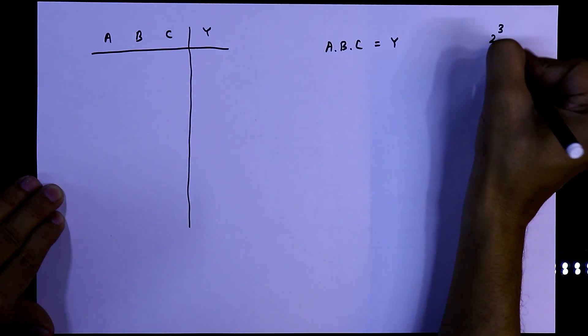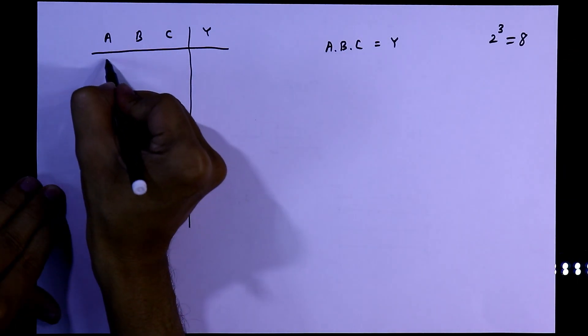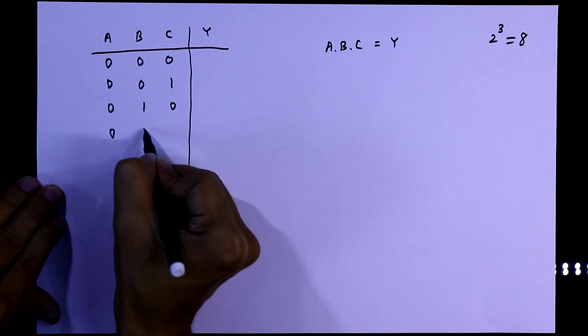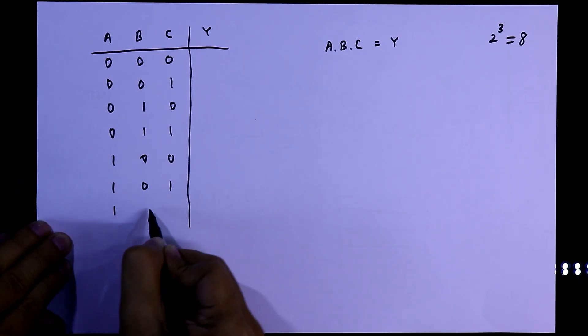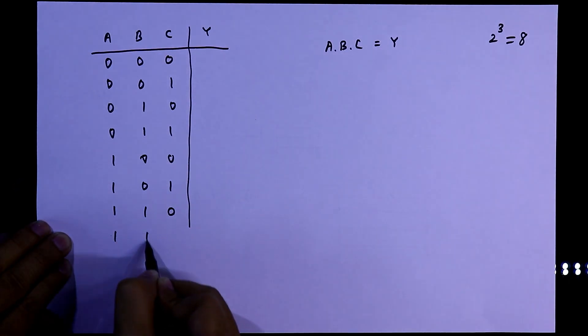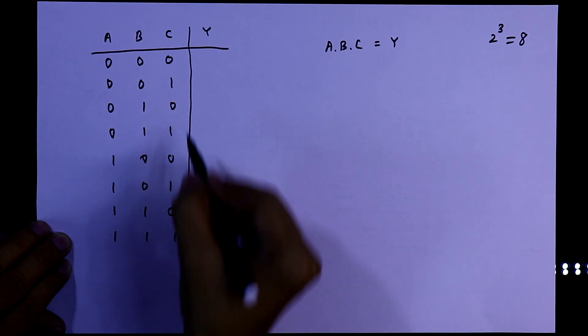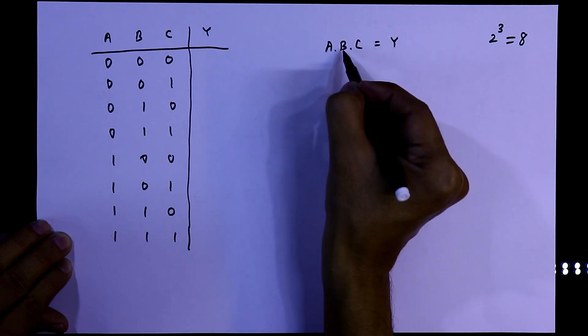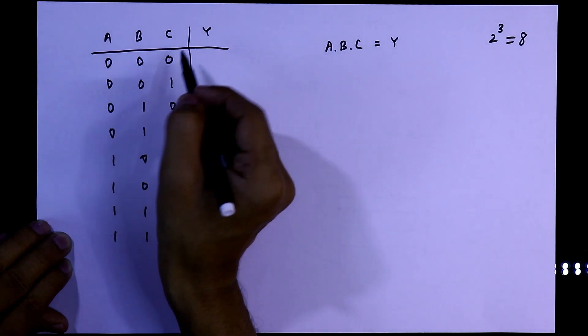The combinations start from 0, 0, 0 up to 1, 1, 1. These are the 8 inputs. For the AND operation A·B·C, if any input is 0, then the output will be 0.